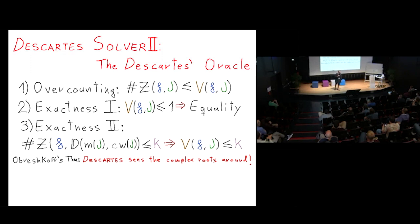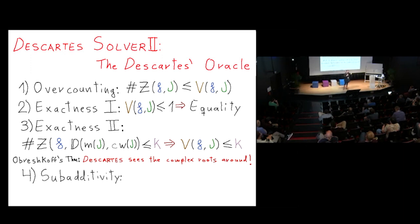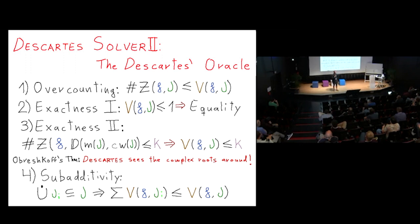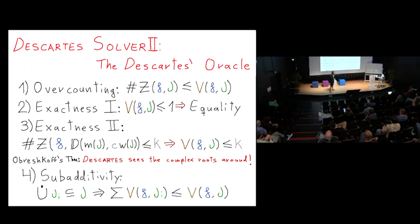The most important property for using this as an algorithmic oracle is sub-additivity. If I take my interval and divide it into several sub-intervals, the sum of the count in each sub-interval is at most the original count. This guarantees that the total sign count across subdivisions will not increase — so the number of intervals considered doesn't grow enormously.